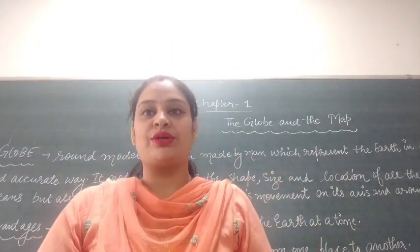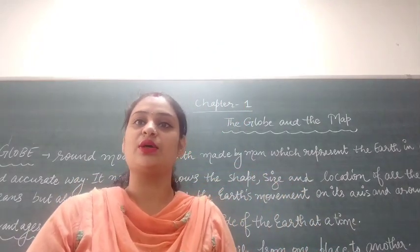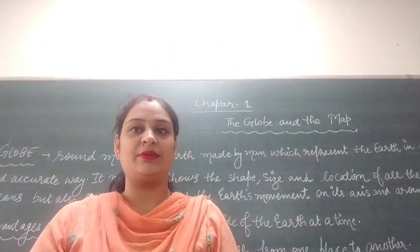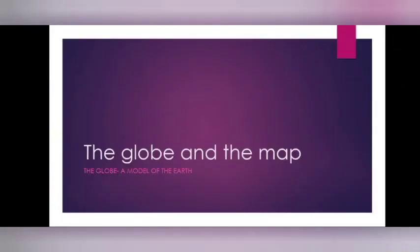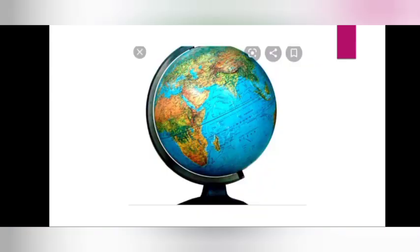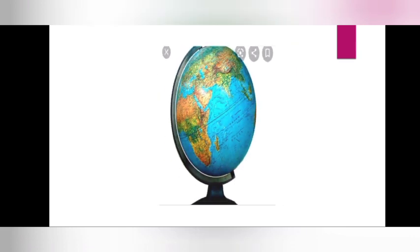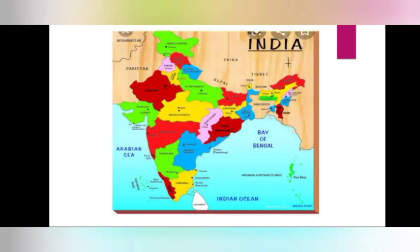So today we are going to start our first chapter which is the Globe and the Map. You all have seen the globe and map in your books or on the internet. This is the globe you all have seen earlier, and next is a map — a map of India.